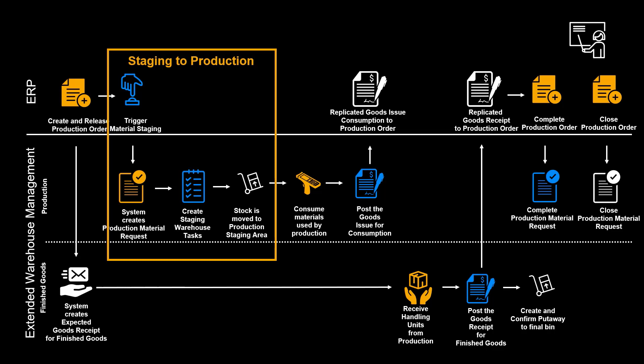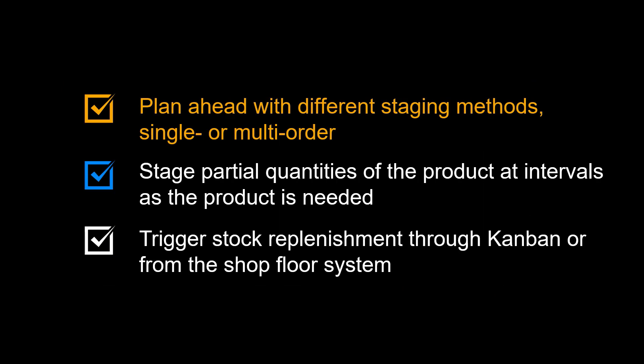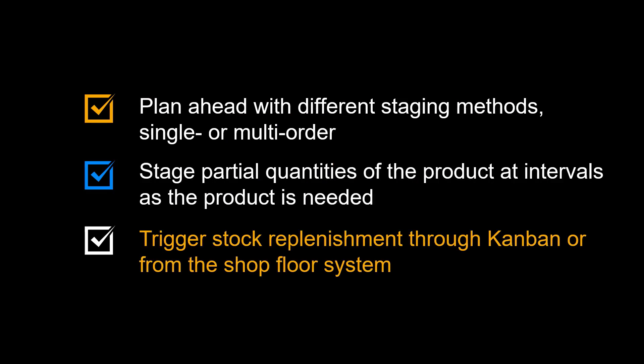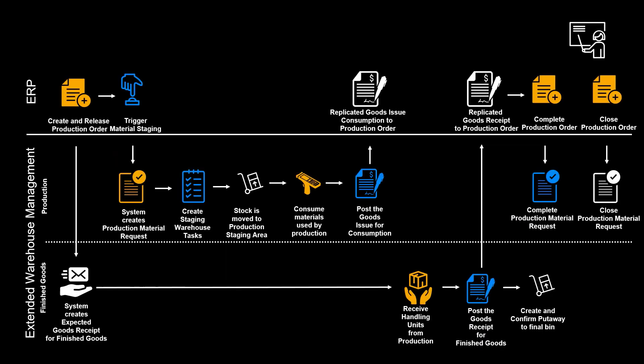Before we trigger the material staging, let's spend a few words on staging to production. You can plan ahead with different staging methods, single or multi-order. You can stage partial quantities of the product at intervals as the product is needed. Trigger stock replenishment through Kanban or from the shop floor system. When time is due, we can trigger the production supply area staging from the production order.